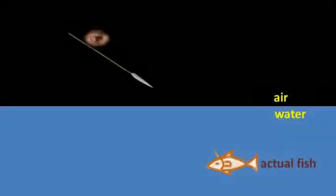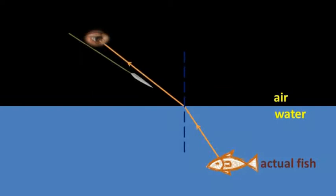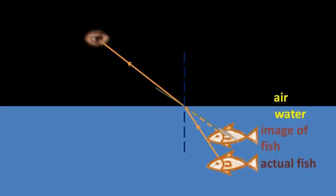If the fish is actually here, the light travels upwards and refracts away from the normal. Our eyes therefore point along this line of sight, which continues along this line, and so the light appears to be coming from here, and this is where the fish appears to be. If you aim here, you'll miss.